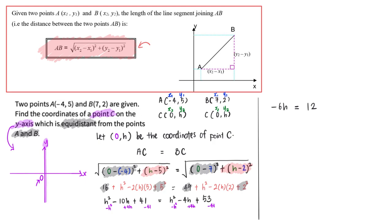So I'm going to divide by negative 6 on both sides so that I will be able to get what is the value of my h, and that will be negative 2.